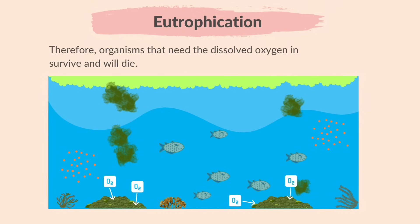Therefore, organisms that need the dissolved oxygen in water can't survive and will die. Overall, eutrophication caused by human waste inputs can disrupt the balance of aquatic ecosystems by depleting oxygen levels and harming the organisms dependent on it.